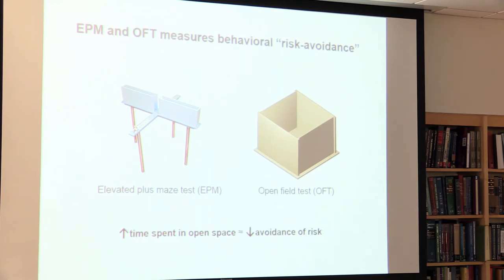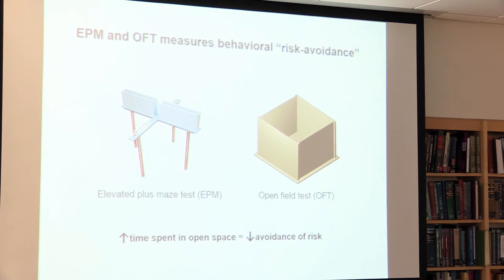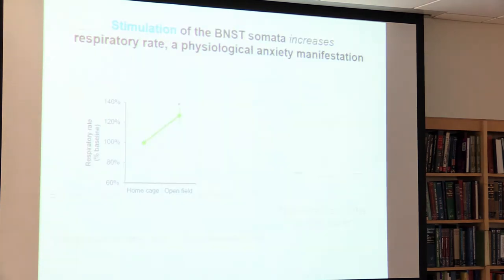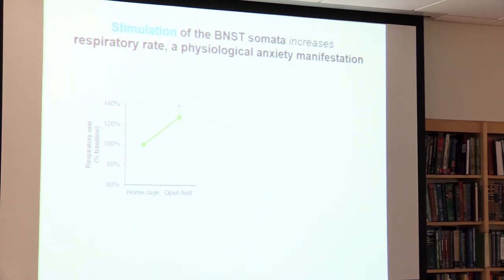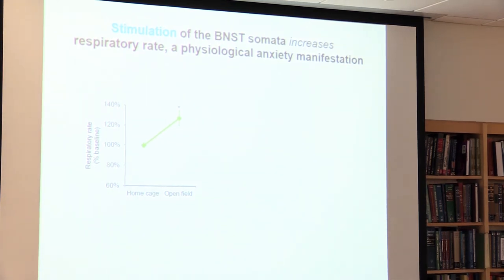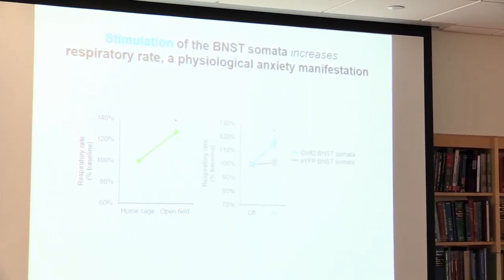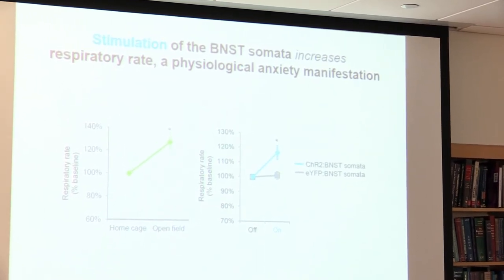But what we are really measuring with the EPM and OFT is behavioral risk avoidance—certainly part of the anxious state, but not the entire state. So we focused on respiration. Hyperventilation is linked to higher anxiety in both humans and rodents: mice breathed faster in the open field compared to home cage. Altered respiration is a prominent symptom of panic disorder. Stimulating the BNST somata increased the respiratory rate—and from the previous experiments, the same manipulation also increased risk avoidance behavior. This suggests that overall BNST activity promotes anxiety and can modulate both behavioral and physiological features.